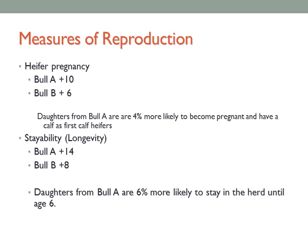We have several measures of reproduction in terms of EPDs. Fertility is at least twice as economically relevant as either growth or carcass traits. Several breeds publish a heifer pregnancy EPD or stayability, which is a reproductive longevity EPD. A four-point difference in heifer pregnancy EPD means daughters from bull A are four percent more likely to become pregnant as first-calf heifers. A six-point difference in stayability means daughters from bull A are six percent more likely to stay in the herd and be productive until age six.